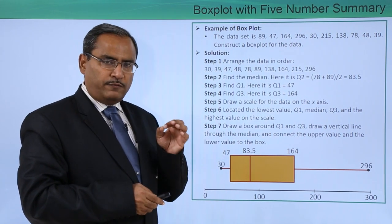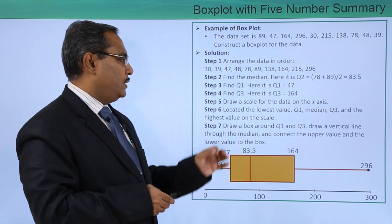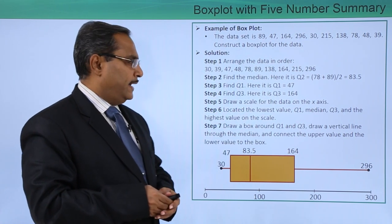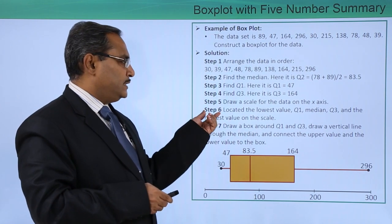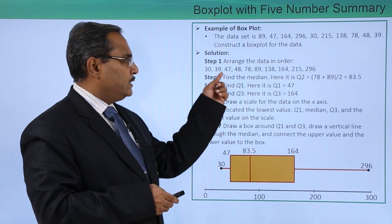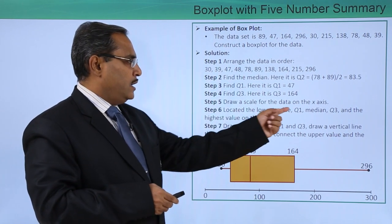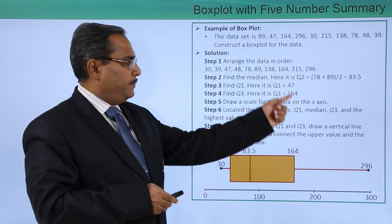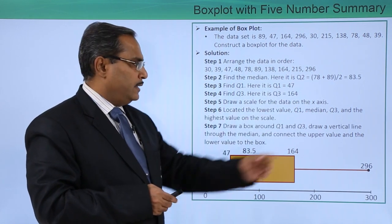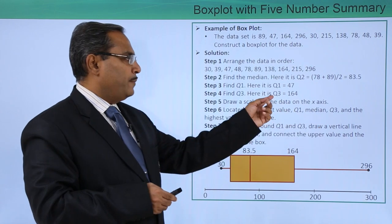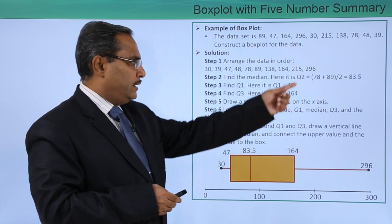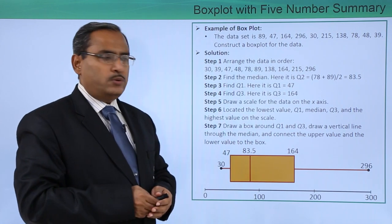We have got the value of Q1, Q2 and Q3. Draw a scale for the data on the x-axis. Step 6 is to locate the lowest value. We know the lowest value, that is 30. Q1 already we have calculated, that is 47. Median, that is our Q2, that is 83.5. And then Q3 we have calculated as 164, and the highest value of the scale, that is 296.